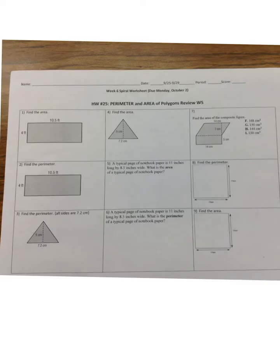Turn the page — make sure you have homework number 25, the perimeter and area of polygon review worksheet in front of you. Reminder: corrections aren't just writing the right answer, you have to put the work that goes with it. Be very careful when selecting your answers — many problems look the same shape, but one asks for perimeter and another for area, so make sure you know what you're actually looking for.